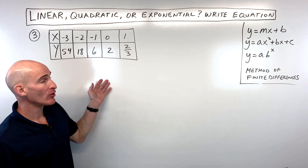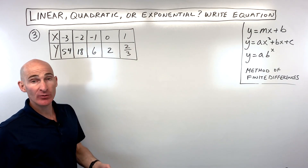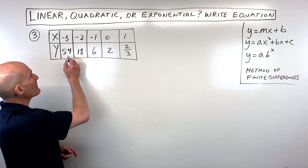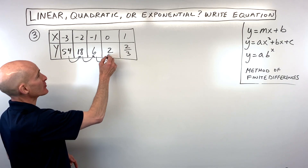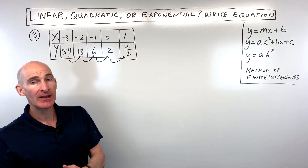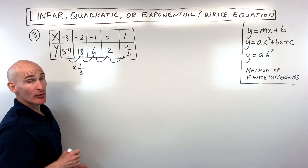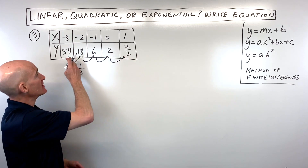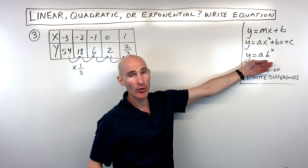For example number 3, I notice that the y values look like I'm dividing by 3 each time: 6 divided by 3 is 2, 2 divided by 3 is 2 thirds, 54 divided by 3 is 18. Dividing by 3 is the same as multiplying by the reciprocal, 1 third. When you're multiplying by the same number each time to get to the next y value, that tells you it's an exponential equation, and that base b is 1 third.